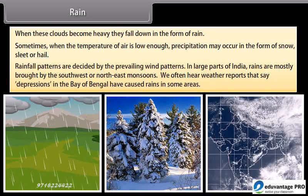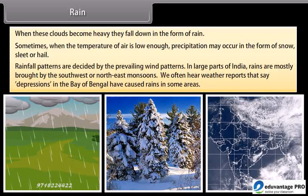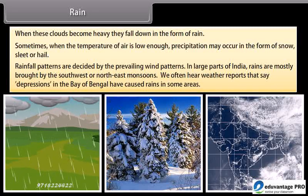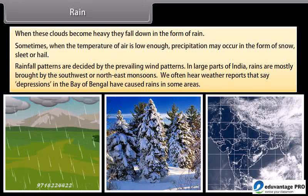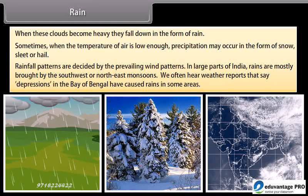Rainfall patterns are decided by the prevailing wind patterns. In large parts of India, rains are mostly brought by the southwest or northeast monsoons. We often hear weather reports that say depressions in the Bay of Bengal have caused rains in some areas.